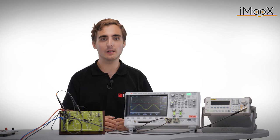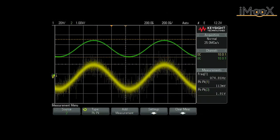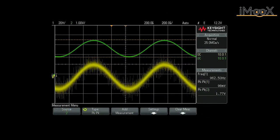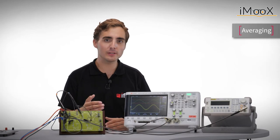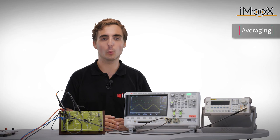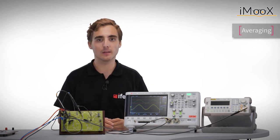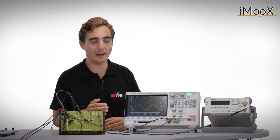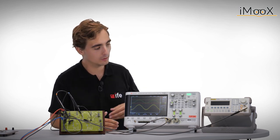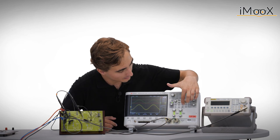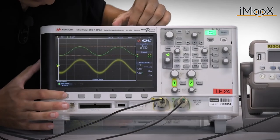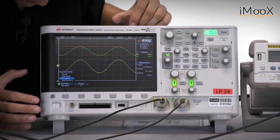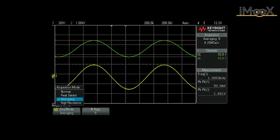However, you can see that due to the noise on channel 1, the measurements are quite inaccurate. To reduce this effect, we can average our signal over some periods, which gives us a noise-free signal. In this way, our amplitude measurement becomes quite accurate. To do so, we have to go to the Acquire menu and select Averaging in the Acquire mode.